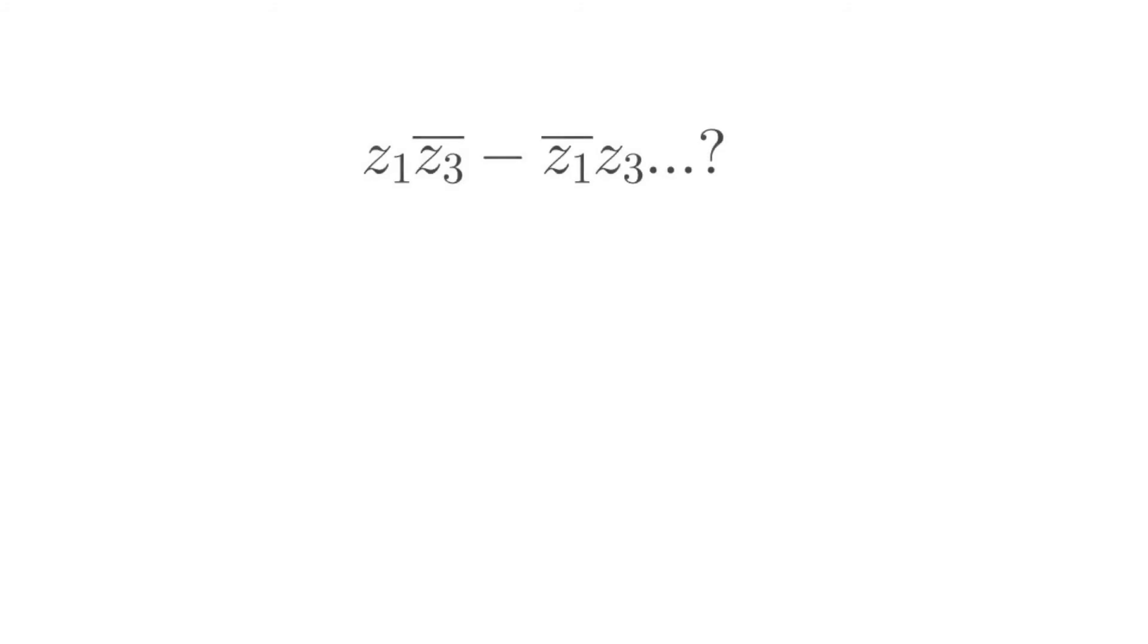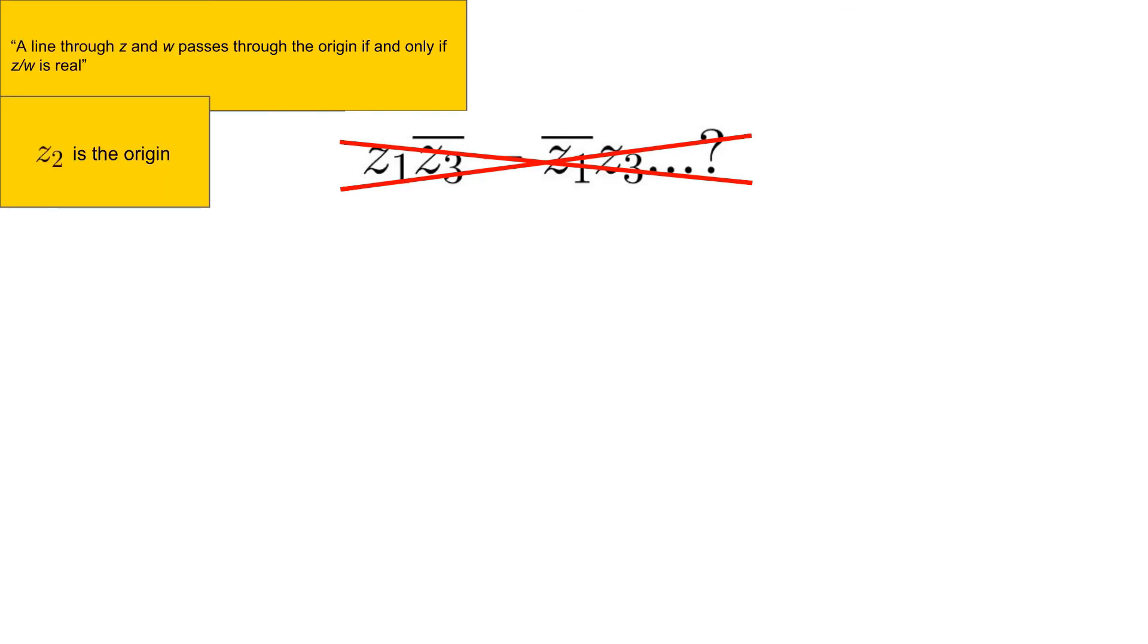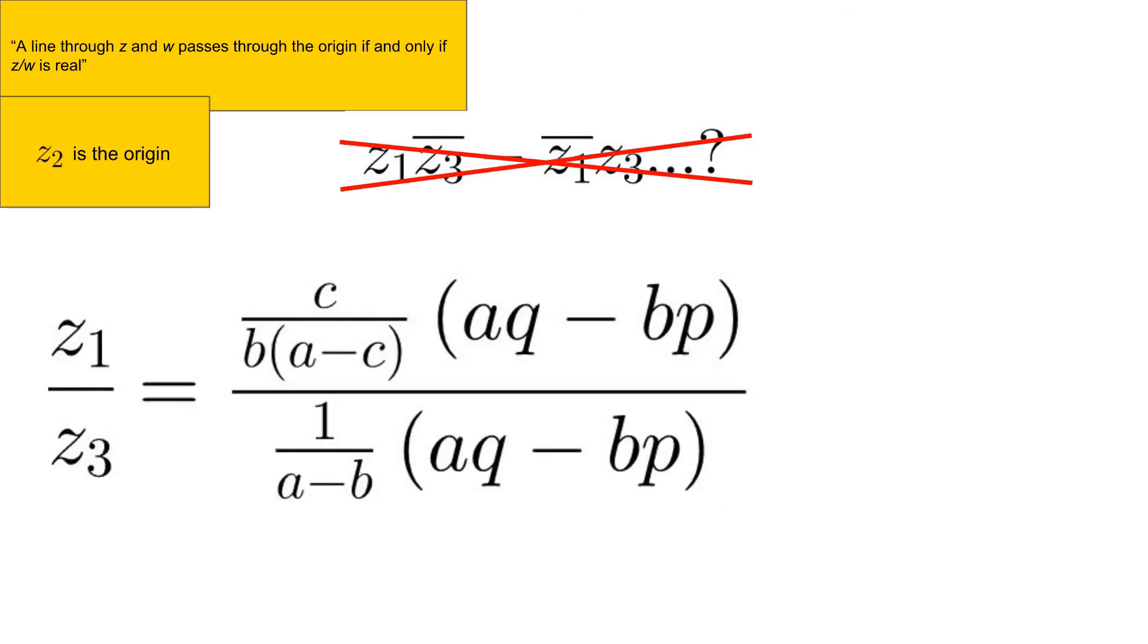Now do we want to calculate our expression for collinearity? As it turns out, we don't have to. If we think back to section 8.2, we recall that a line through two points crosses through the origin if and only if the quotient is real. Letting Z2 be the origin pays off yet again as we divide Z1 by Z3. We can now see that our factoring paid off and we're left with an expression which only has the radii of the circles.